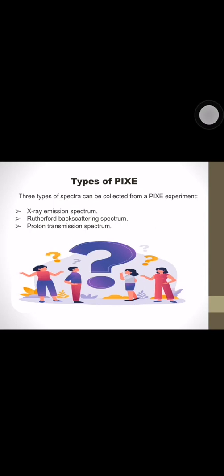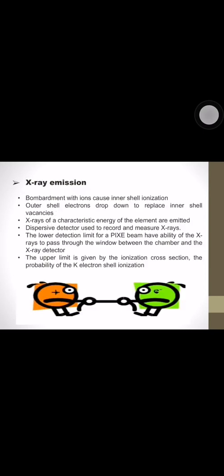Types of PIXE: There are three types of spectra that can be collected for PIXE experiment. The first one is x-ray emission spectrum, the second is Rutherford backscattering spectrum, and third is proton transmission spectrum. Quantum theory states that orbital electrons of an atom must occupy distinct energy levels in order to be stable. Bombardment with ions of sufficient energy produced by an ion accelerator will cause inner shell ionization of atoms in a specimen. Outer shell electrons drop down to replace inner shell, allowing x-rays of a characteristic energy of the element to be emitted. An energy dispersive detector is used to record and measure these x-rays.